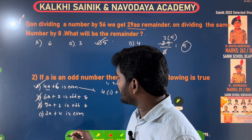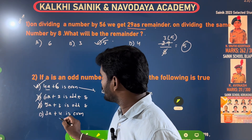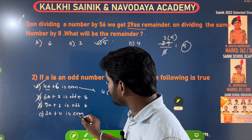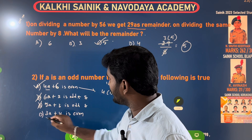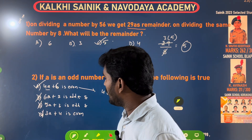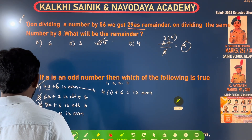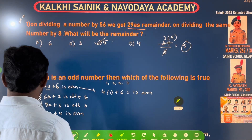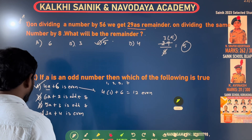3A plus 4: 3 plus 4 is 7, and 8 is even. Option D is the wrong answer. Option A is the right answer.